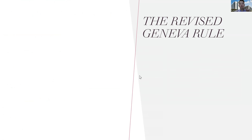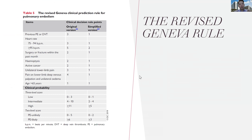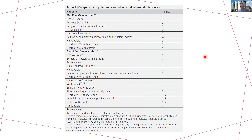Another commonly used scoring system is the revised Geneva rule. Here in this table from the ESC, you can see both the original and simplified versions. There is a three-level score or two-level score. It identifies whether the patient has low, intermediate, or high risk of PE. This slide is a comparison of the scoring systems — a concise table showing the criteria.